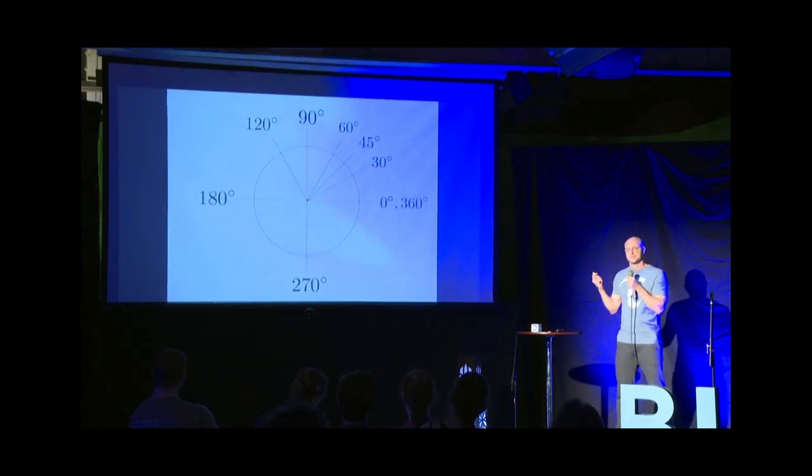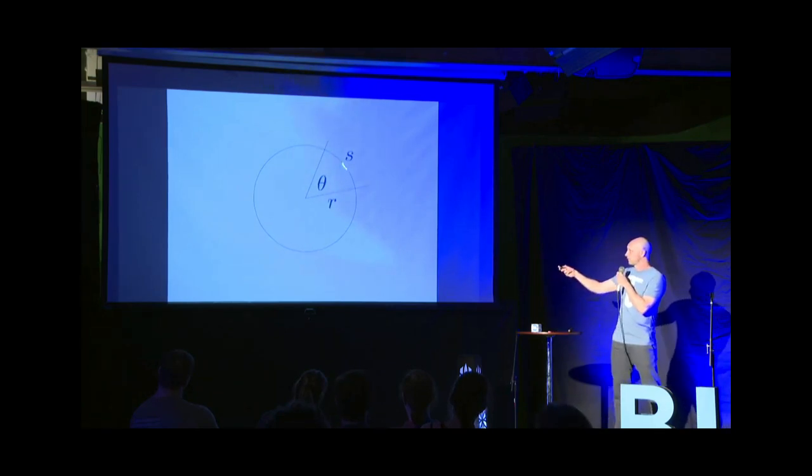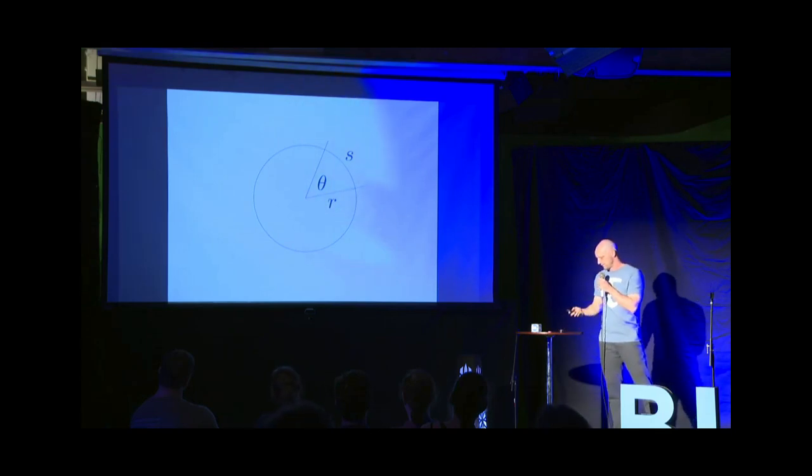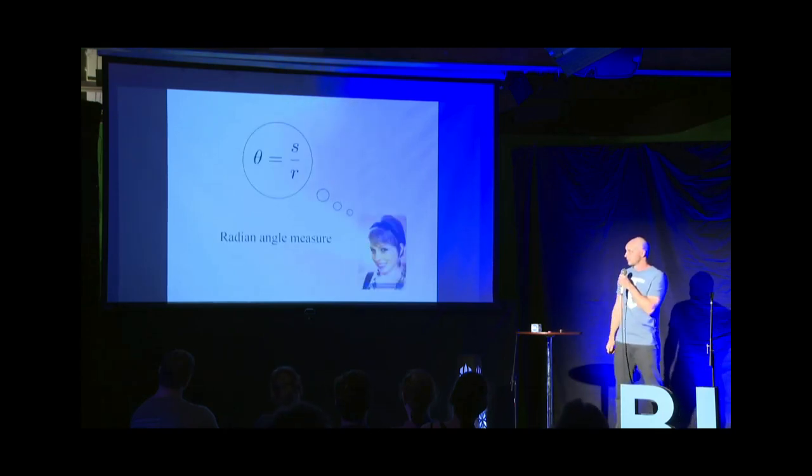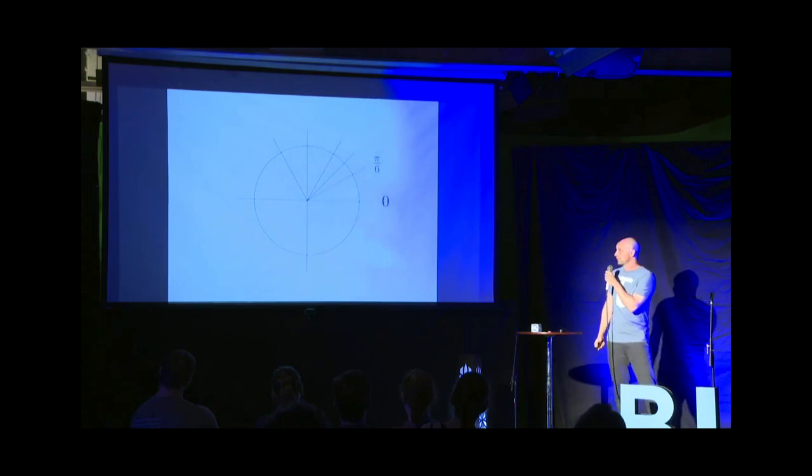But for various reasons, degrees are not the preferred way of measuring angles in mathematics. Instead, mathematicians use what are called radians. So you take an arc length here, S, and you divide out by the radius, R, to get an angle, theta, like this.